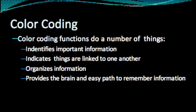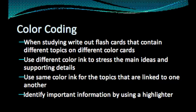Color coding functions do a number of things: it identifies important information, indicates things that are linked to one another, organizes information, and provides the brain an easy path to remember information. When studying, write out flashcards that contain different topics on different color cards. Use different color ink to stress the main ideas and supporting details. Use the same color ink for topics that are linked to one another. Identify important information by using a highlighter.